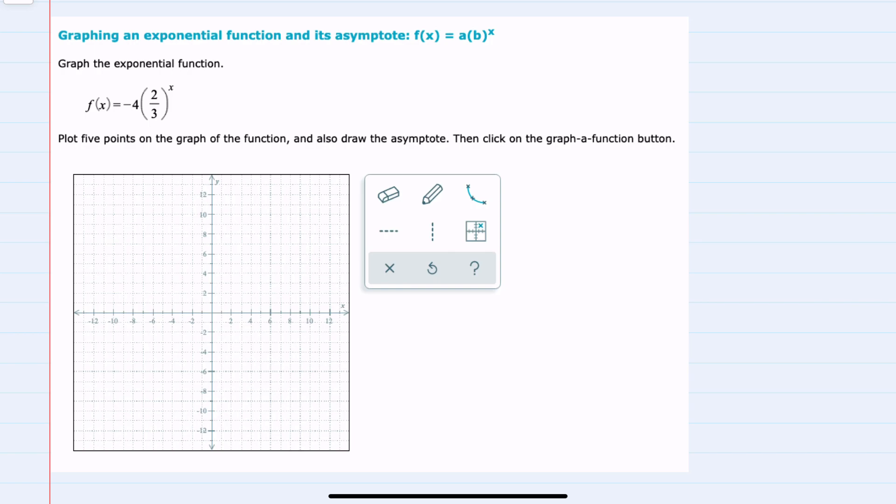We're given our function here, f of x, and we're asked to graph it by finding five points on the graph and to also draw the asymptote.